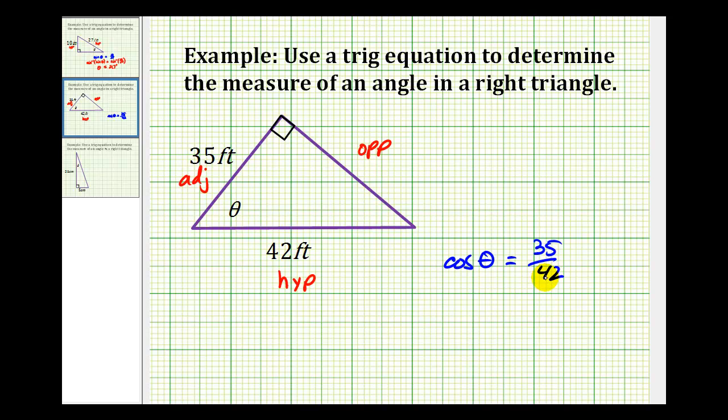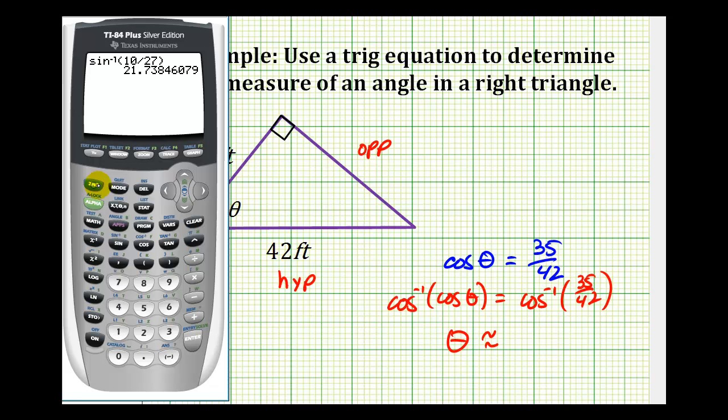And now we'll take inverse cosine of both sides of the equation. Inverse cosine of cosine theta will give us theta, and now we'll go back to the calculator. Press second cosine, thirty-five divided by forty-two. Here, theta is approximately thirty-three point six degrees.